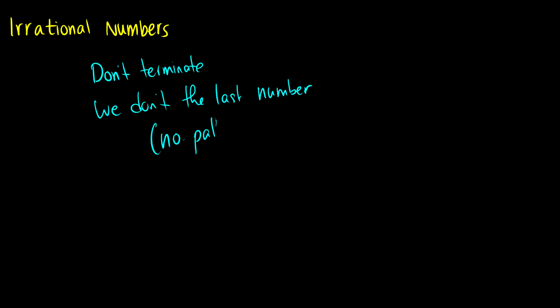Because sometimes, for instance, if we have the number one third, we know this is equal to 0.333 dot dot dot, and it's threes forever. But we know that the quote unquote last number is three. So we know the pattern.